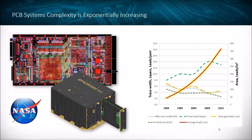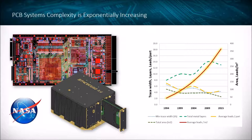I'd like to show why it's important to build solid, correct library parts. The main takeaway is that red line showing average leads per square inch on printed circuit boards increasing exponentially. Back in 1994 we had about 50 leads per square inch; now it's over 350. Packages are getting smaller and footprints are more difficult to create, so I hope to alleviate fears of creating your own components and ensuring they're valid, usable footprints.